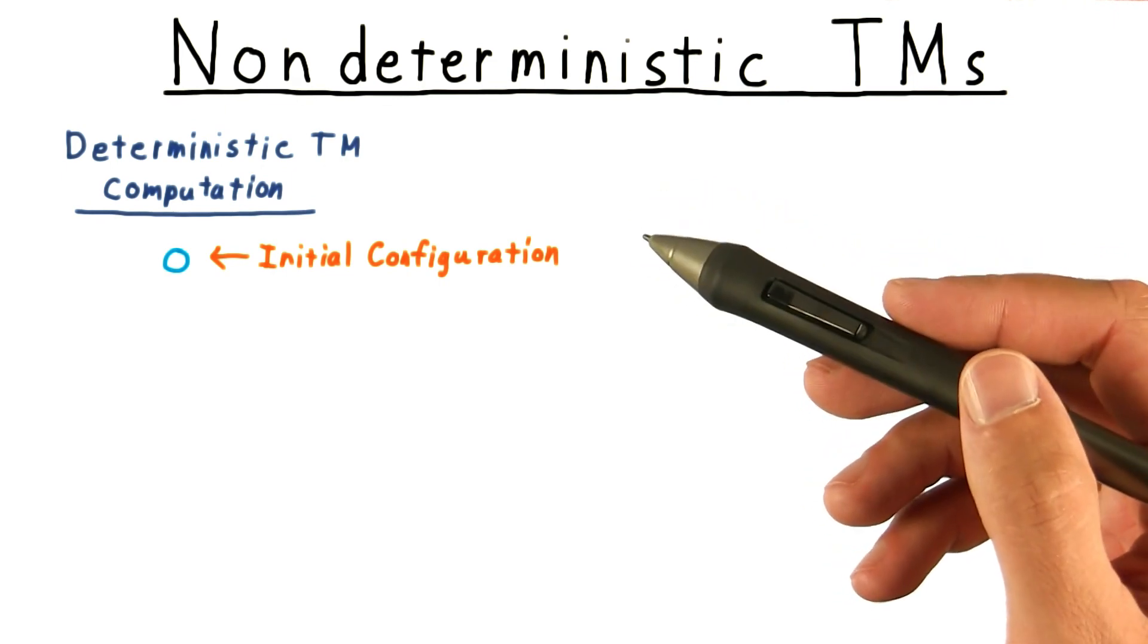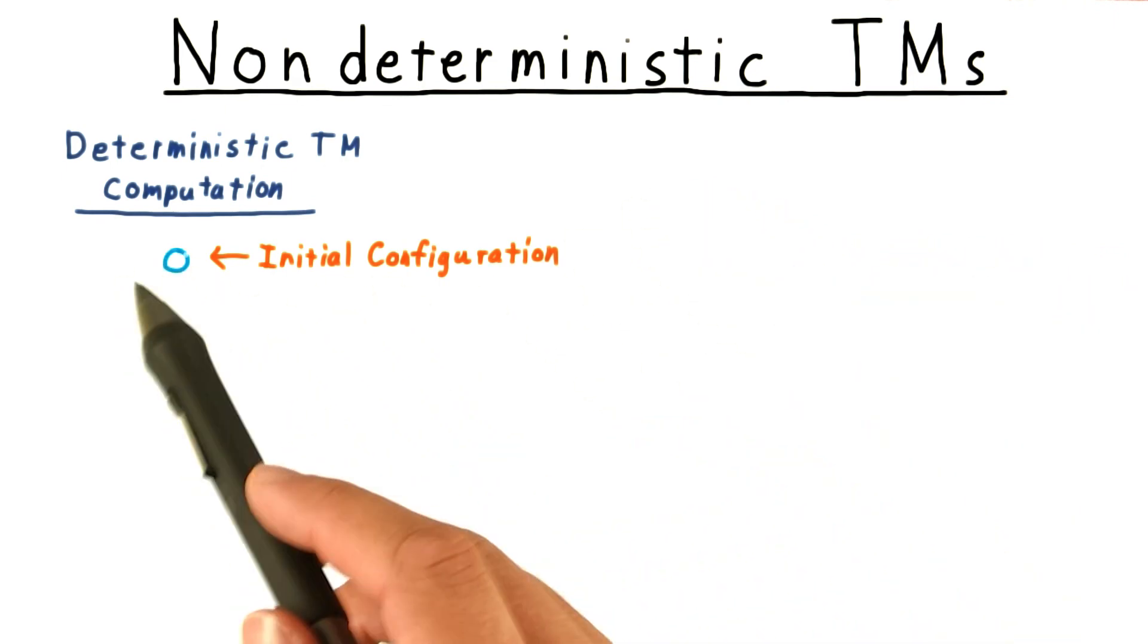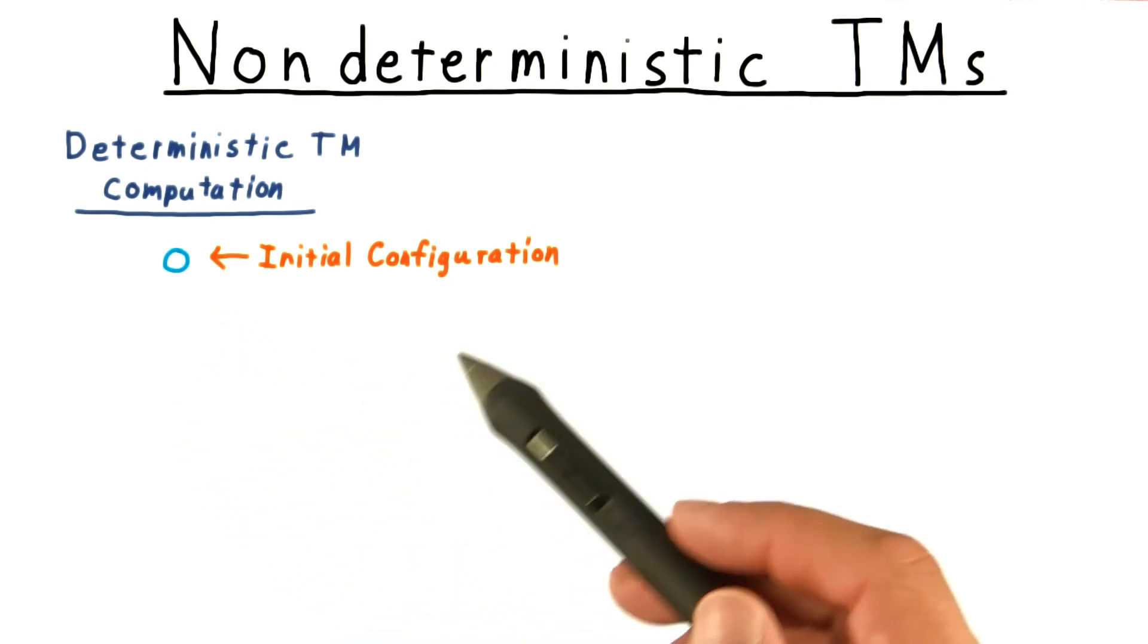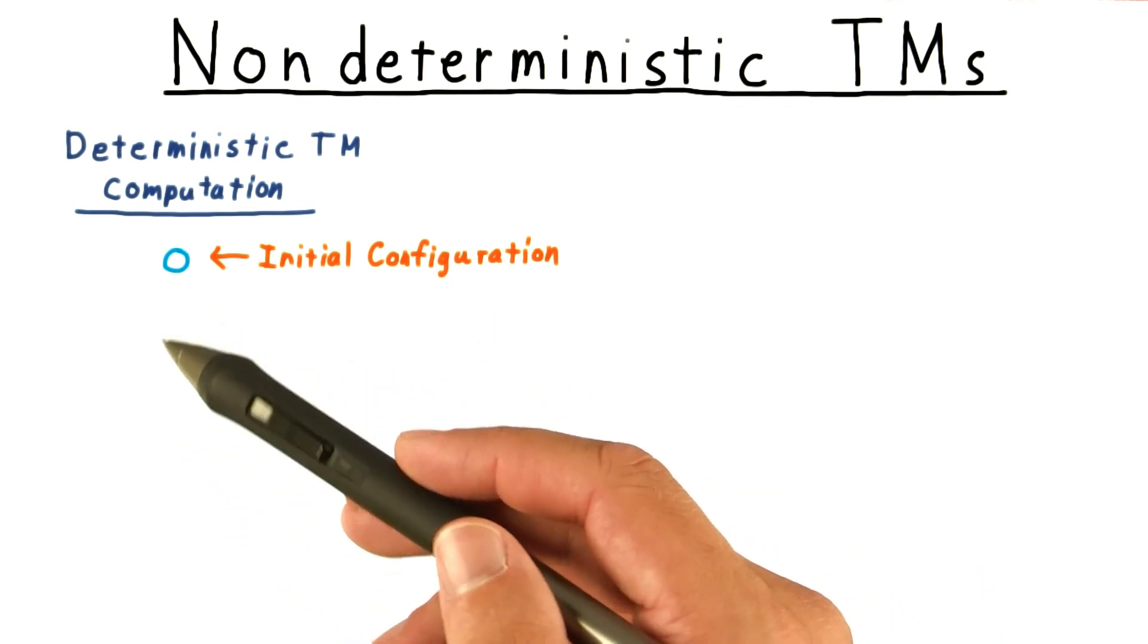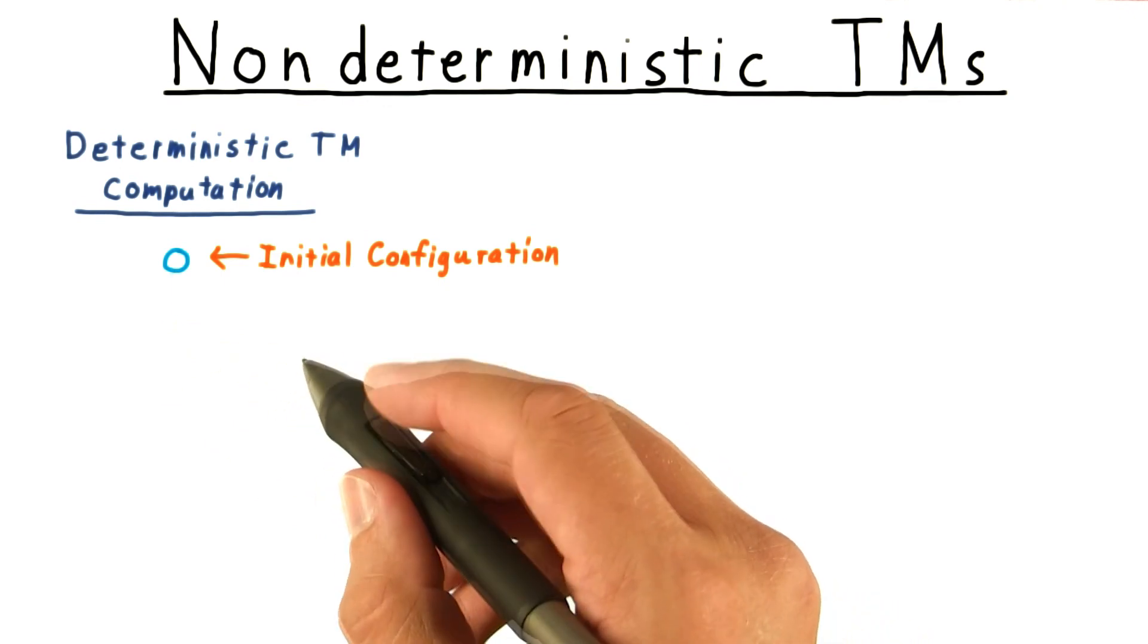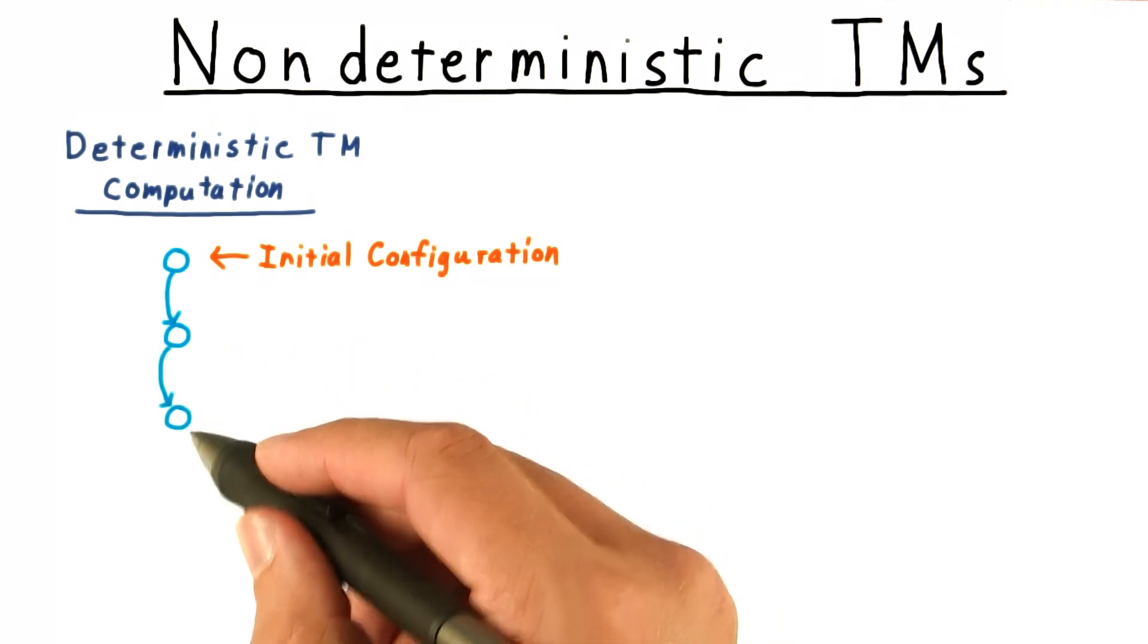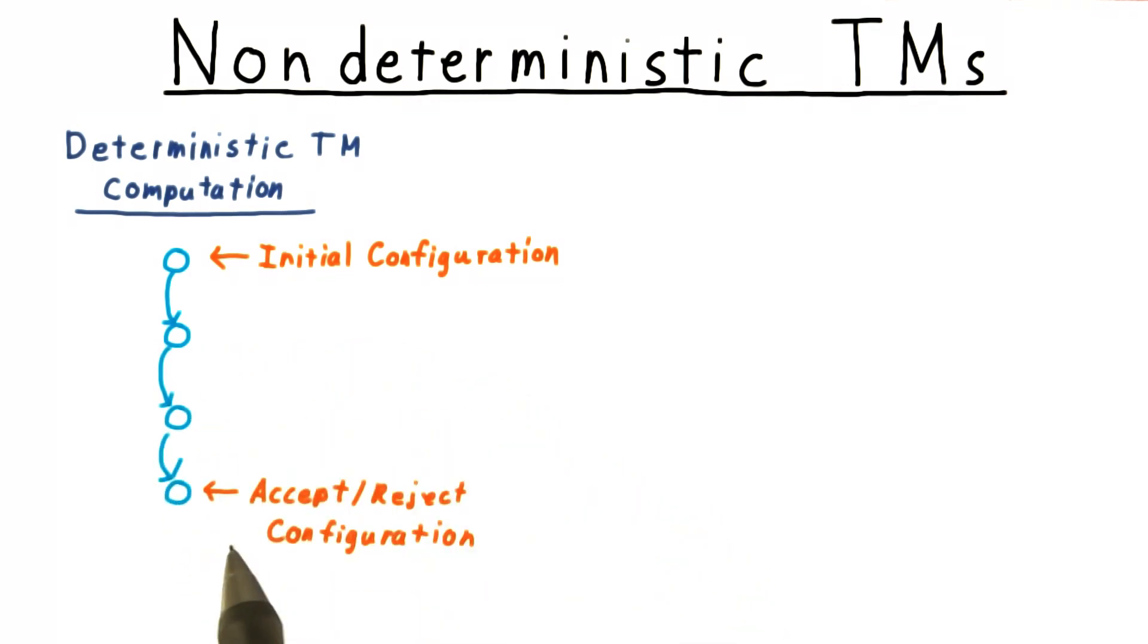A deterministic computation starts in some initial state, and then the next state is exactly and uniquely determined by the transition function. There's only one possible successor configuration. And to that configuration, there's only one possible successor. And so on, and so forth, until an accepting or rejecting configuration is reached, if one is reached at all.